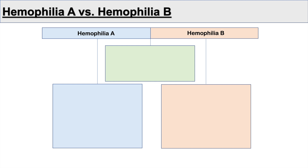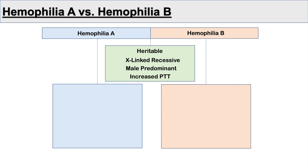In summary, what are some of the similarities and differences between hemophilia A and hemophilia B? Hemophilia A and B share certain characteristics: they are both heritable, both X-linked recessive, and therefore both male predominant. They both have an increased PTT, and they are both disorders of secondary hemostasis, meaning they share the same presentation: delayed bleeding, deep bleeds, and spontaneous hemarthrosis.